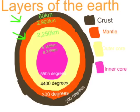The outer core is 2,250 kilometers and is 4,400 degrees. The inner core is between 5,159 to 6,378 kilometers and it is 5,505 degrees.